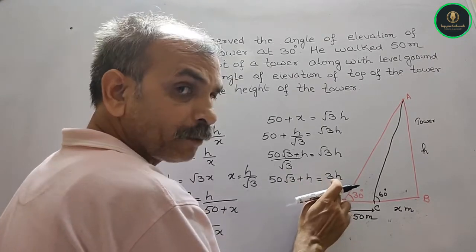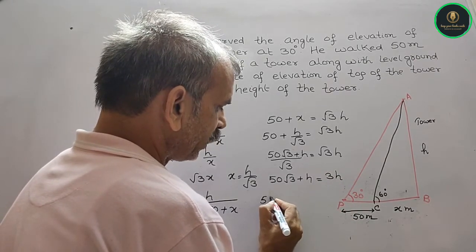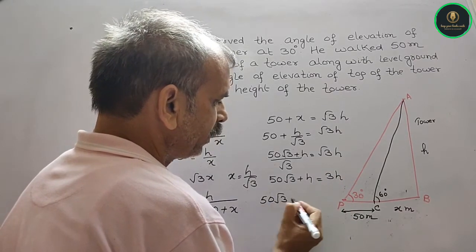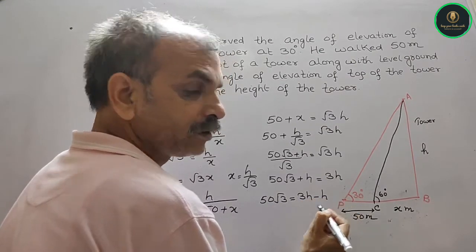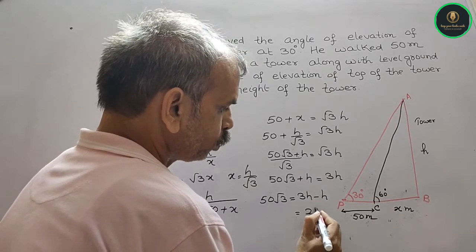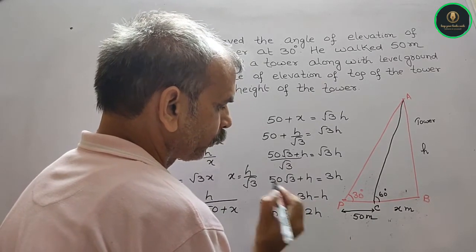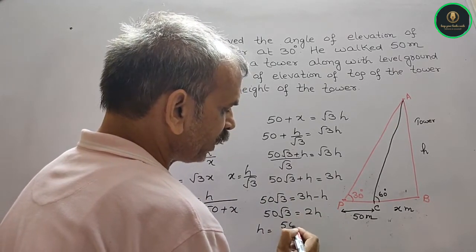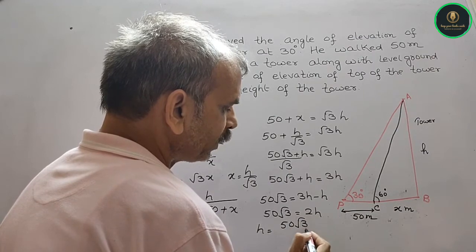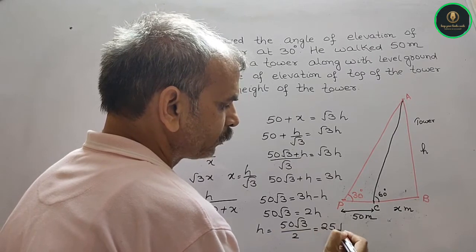Now move h to the other side. So you have 50√3 equals 3h minus h, that is 2h. So 2h equals 50√3, so h equals 50√3 by 2, that is equal to 25√3 meters.